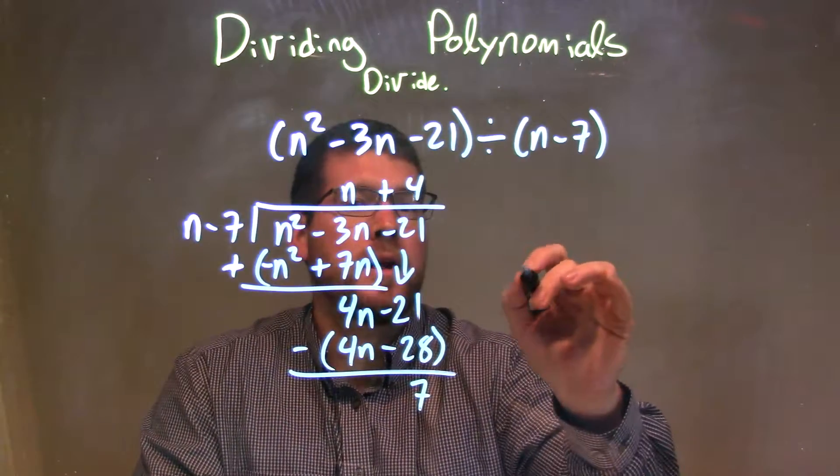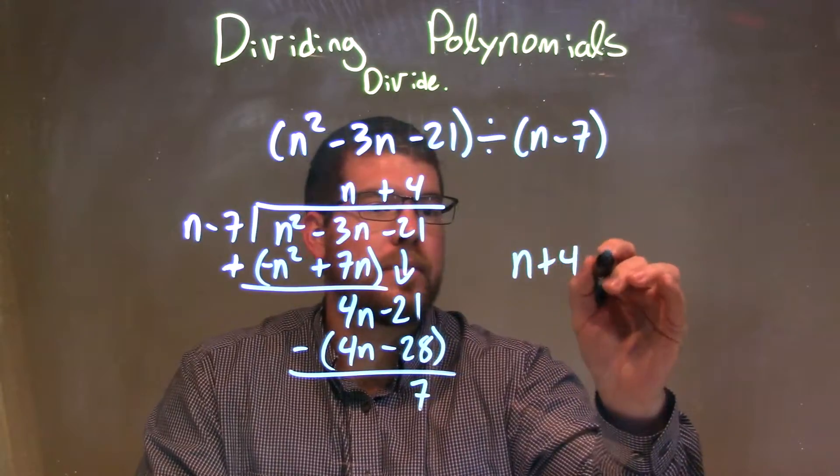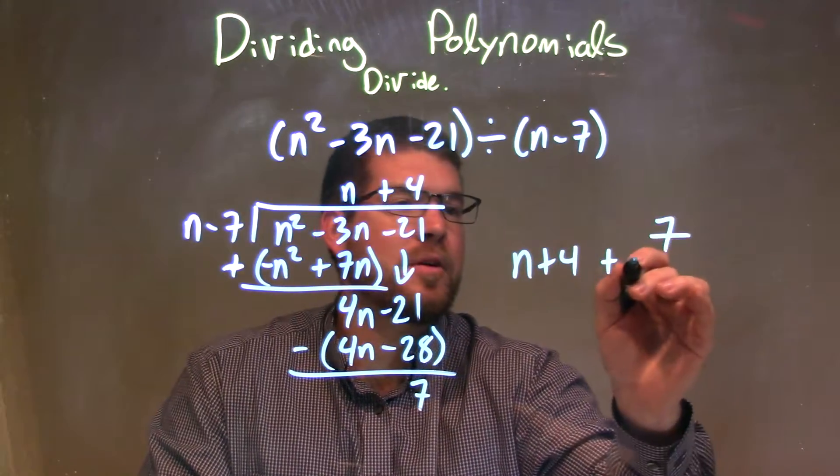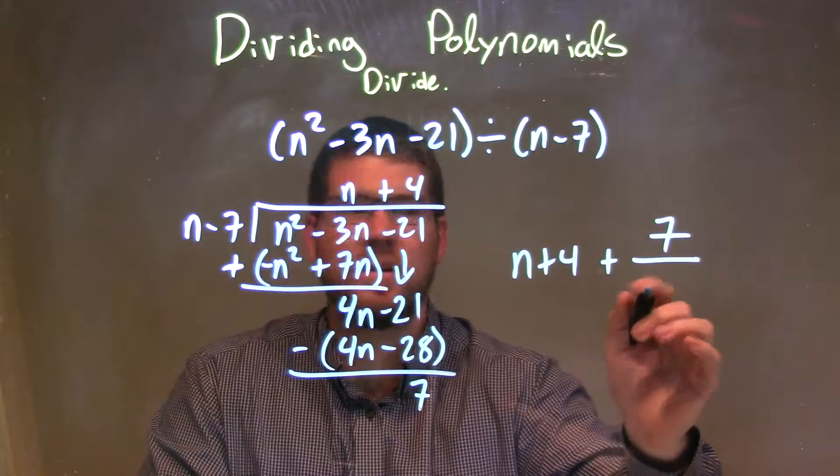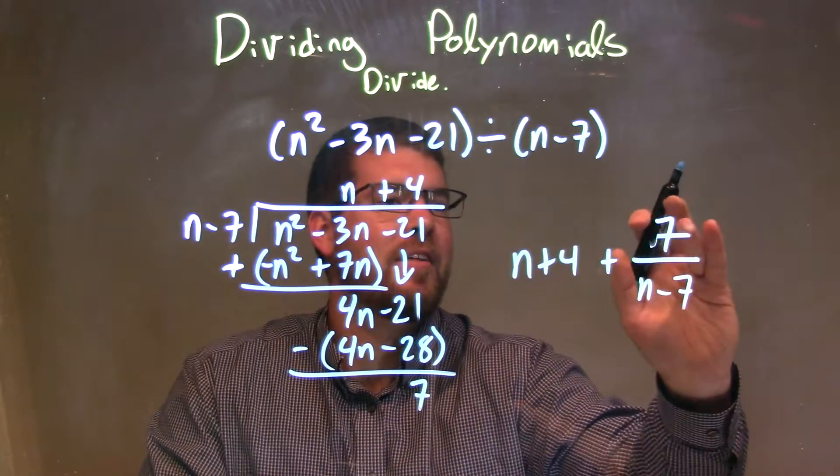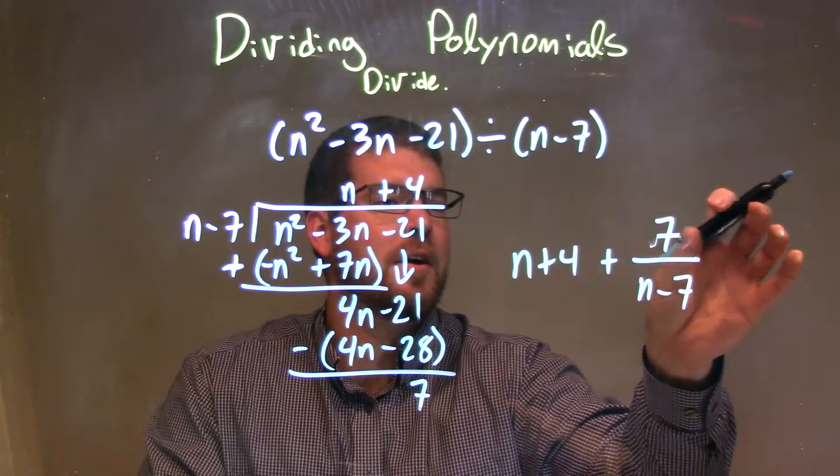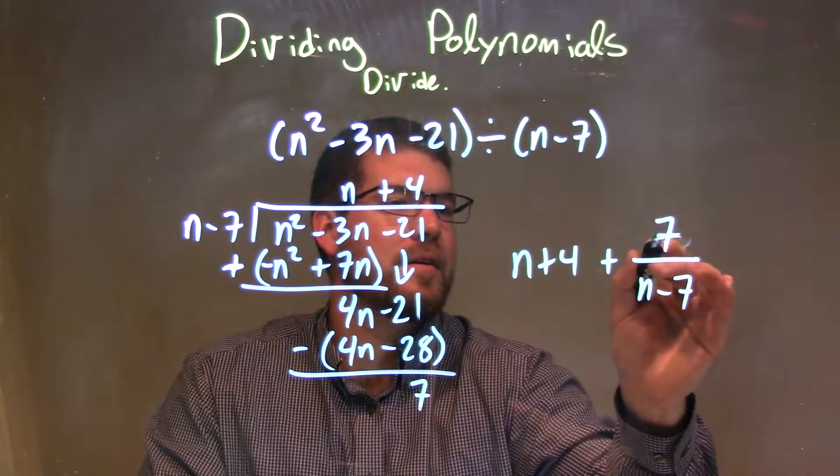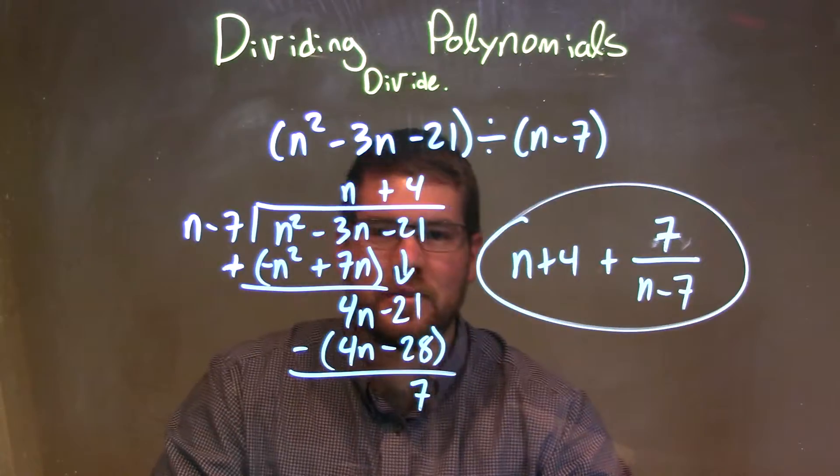So now when I write my final answer, I have n plus 4 plus 7, our remainder, over, that's a big bar for the 7, over n minus 7. Won't that make that one as big? That just doesn't look great. Ugh. There we go. Good enough, all right? And that is our final answer.